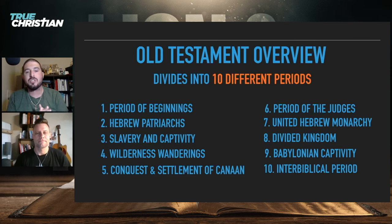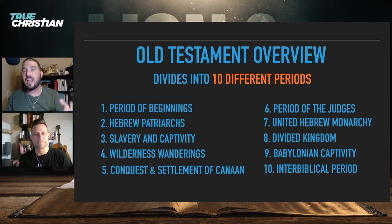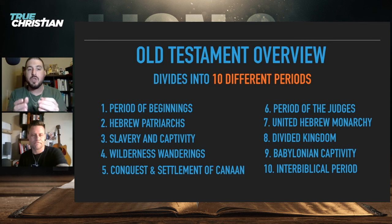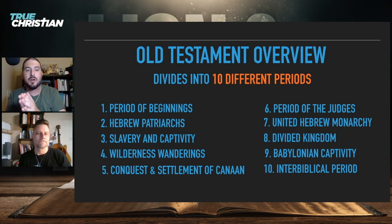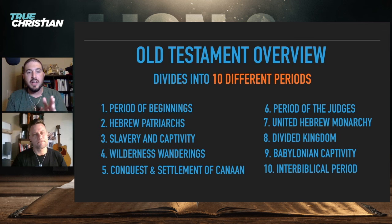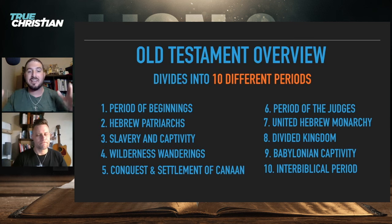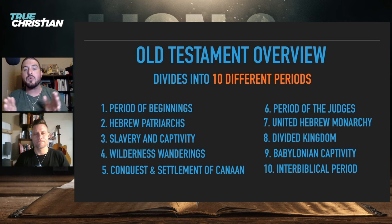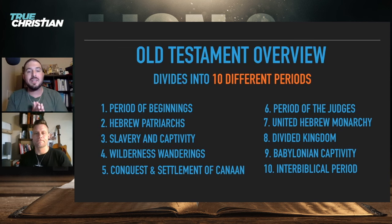Opening the first slide — an overview of the Old Testament. There's a lot that happens. We have the period of beginnings with Noah and Adam, then God splits the nations. Then the period of the Hebrew patriarchs — the fathers of the Hebrew nations. Then slavery and captivity, the wilderness and wanderings with Moses and the Exodus, the conquest and settlement of Canaan, the period of judges, the united Hebrew monarchy, the divided kingdom, the Babylonian captivity, and the interbiblical period.